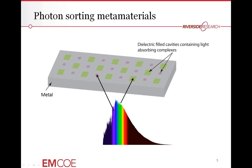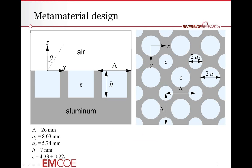So I'm going to begin with the band sorting structure. This is a design that we came up with. Here you have a periodic array of two holes per unit cell, a big hole and a small hole. This is a microwave structure, so the length scales are in millimeters. These cavities are filled with a microwave absorbing material.